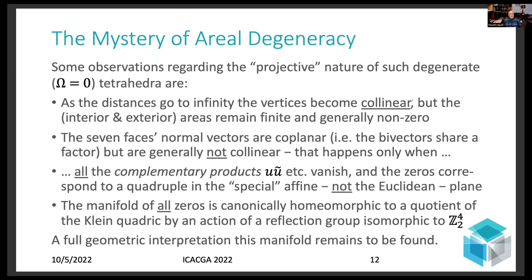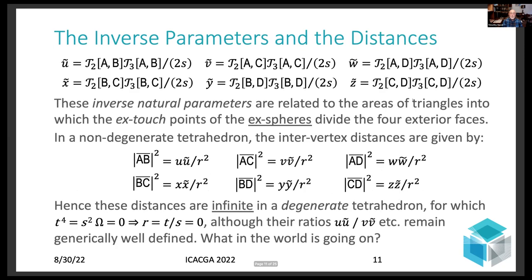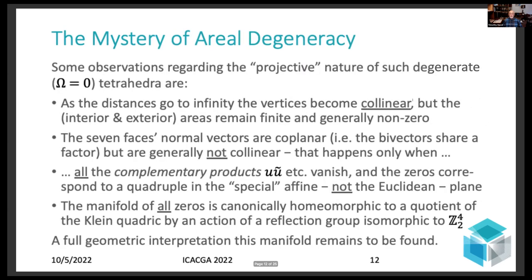So I spent the last year trying to figure out what's going on, and I call it the mystery of aerial degeneracy. So the first thing to notice is that as the distances go to infinity, you can generate sequences of non-degenerate tetrahedra which asymptotically approach one of these zeros. And as you generate them and use graphics to make pictures and watch what's happening, you see that as you approach one of these zeros, the vertices not only go off to infinity, but they go off to infinity along a line with fixed relative rates, sometimes in the same direction, sometimes in the opposite direction. But nevertheless, because of this previous formula, you can see that the ratios, even though the distances go to infinity, when you take their ratios, the in-radius squared cancels out, so the ratios of the distances remain well-defined.